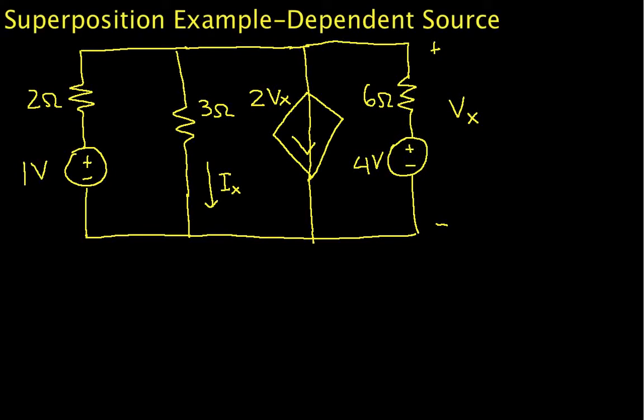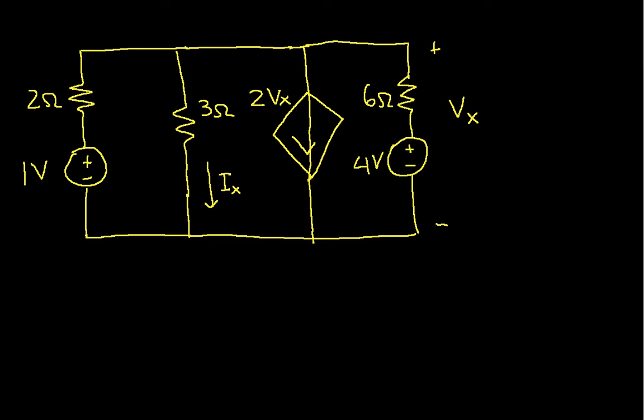Welcome to this example of using superposition to find voltages and currents in a circuit with a dependent source. The goal is to find Ix and Vx in the circuit. When applying superposition, we find the output Vx and Ix due to each of the independent sources by setting the other independent source to zero.